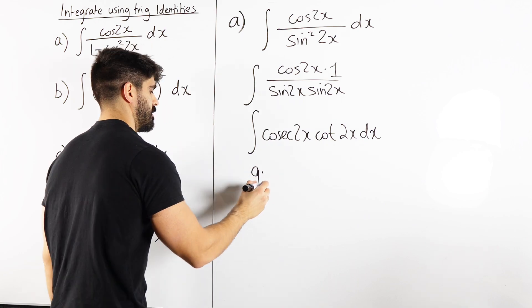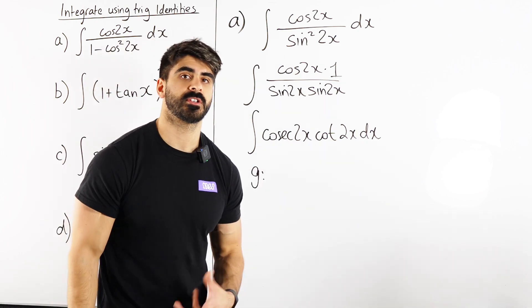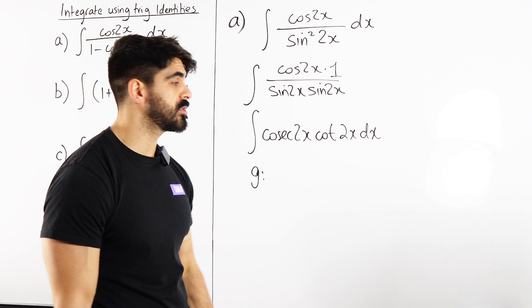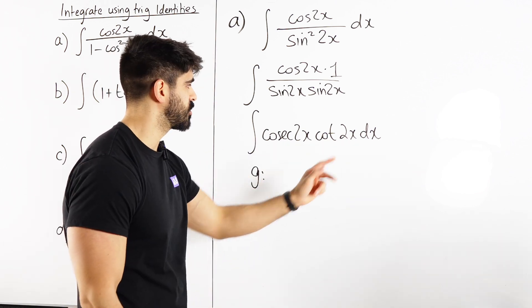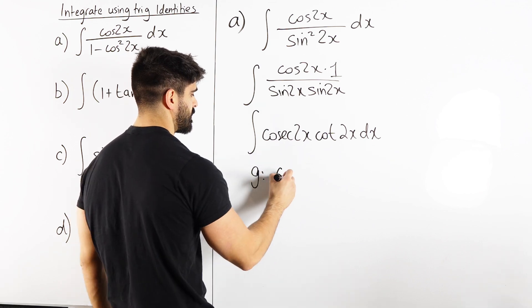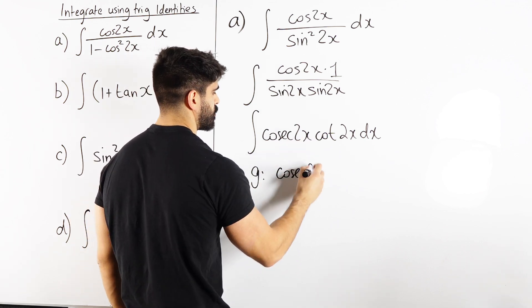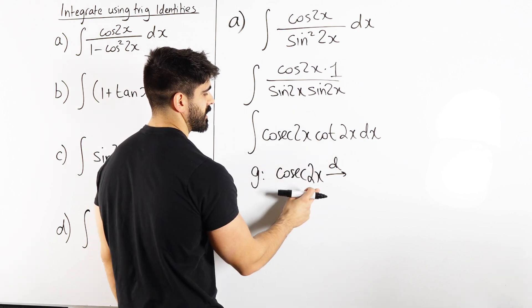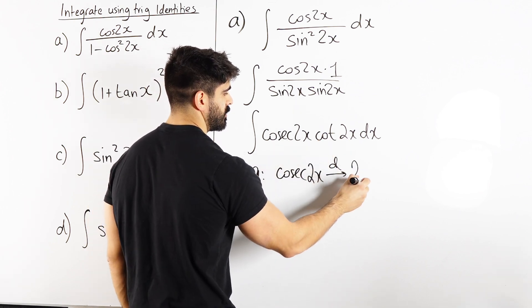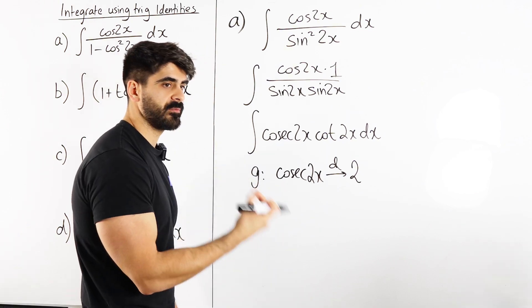Now we can make a guess. Remember, from our experience, we're saying, what do I know differentiates to this form? Well, I know cosec differentiates to this form. So my guess is cosec, but the angle stays the same. Then we differentiate it to check. Cosec 2x, you differentiate the angle first, 2. Then cosec, remember my advice to you guys, anything that involves cosec in calculus brings out a negative.